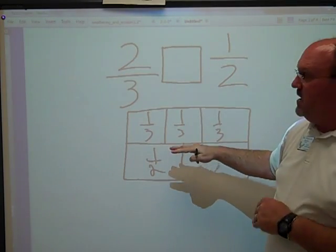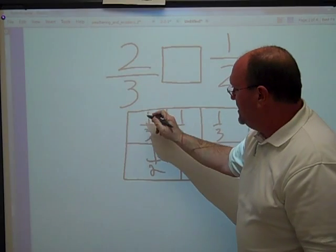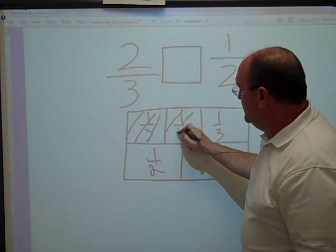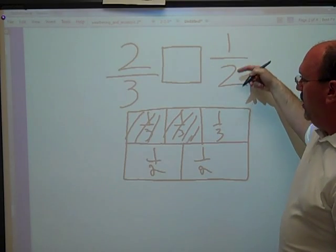Now I can set this up. Now I need to take 2 out of the 3. So I shade 2 thirds, 2 out of 3, and I shade 1 out of 2.